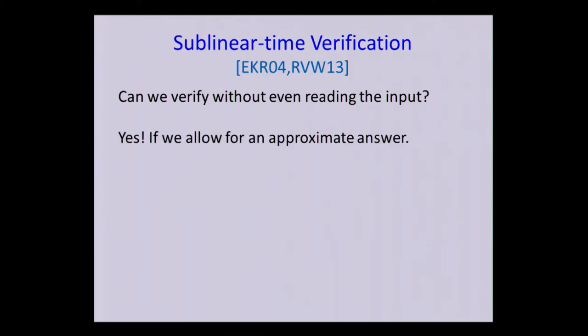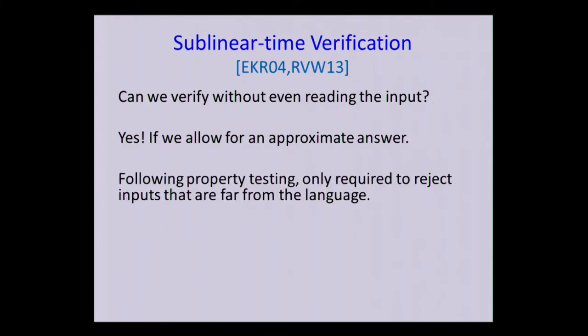But thankfully, this is possible if you're willing to allow for an approximate answer. And the notion of approximation that these two papers took and that we follow follows the property testing literature and it relaxes the answer in the following way. So we want to force or require that the verifier reject every false input, but rather only inputs that are blatantly false, so look very, very different from correct inputs.